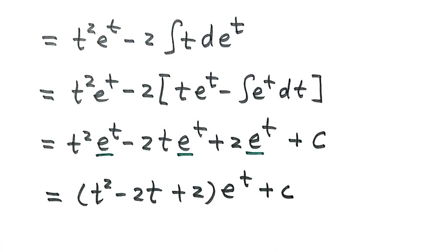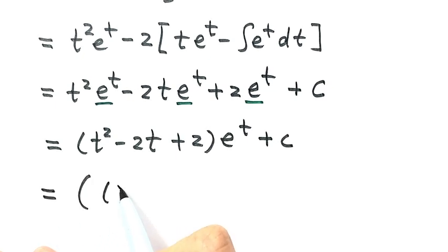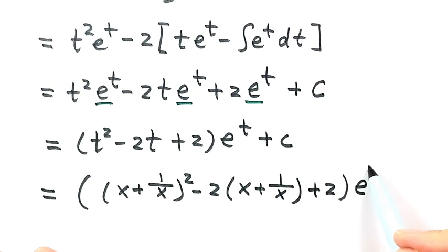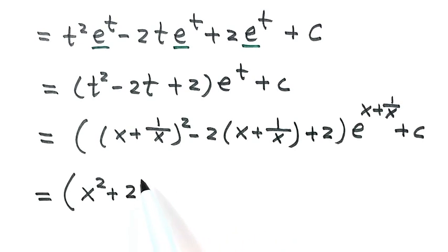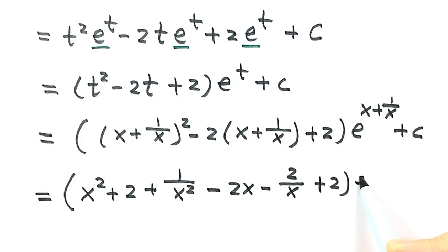Now let's back-substitute for t — put the original expression for t back in. So that's x plus 1 over x, squared, then minus 2 times x plus 1 over x, then plus 2, then e to the power of x plus 1 over x, then plus c. Now let's expand this part. That's x squared, then plus 2, then because 2x times 1 over x is 2 — plus 2, then here plus 2 over x, then plus 2. Then e to the power of x plus 1 over x, then constant c.